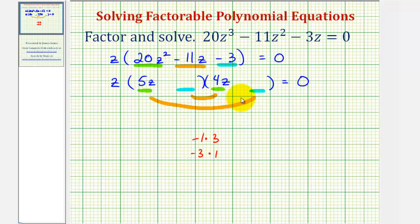So for example, let's try the minus 3 here and the plus 1 here. We'll notice how the inner product is negative 12z and the outer product is 5z.